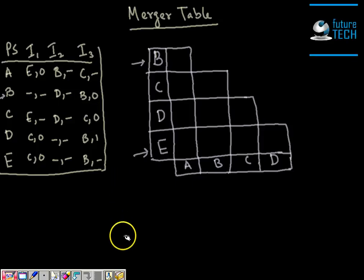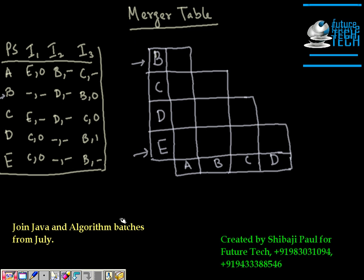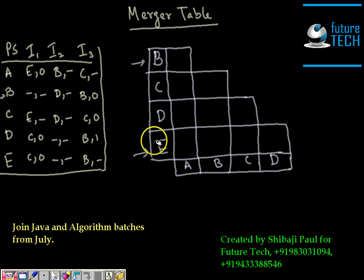In this tutorial we are going to see that using a merger table we can also find out the compatible pairs in an incompletely specified machine. Earlier we learned how to find compatible pairs for an incompletely specified machine using a merger graph. A merger table can also do that — it is an (n-1) × (n-1) lower triangular matrix, where we can list the compatible pairs conveniently.